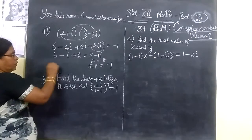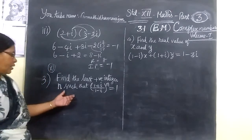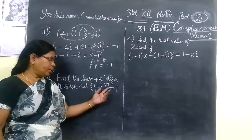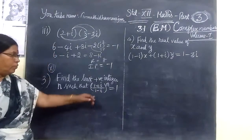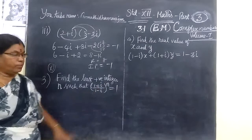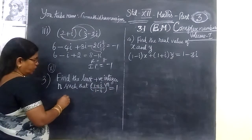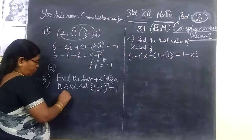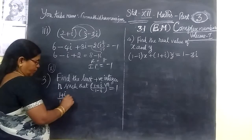And come to the next one. This is very very important. Find the least positive n such that (1 + i)/(1 - i) all over n equal to 1. We have to find the value of n. So for this, you get the conjugate of this.